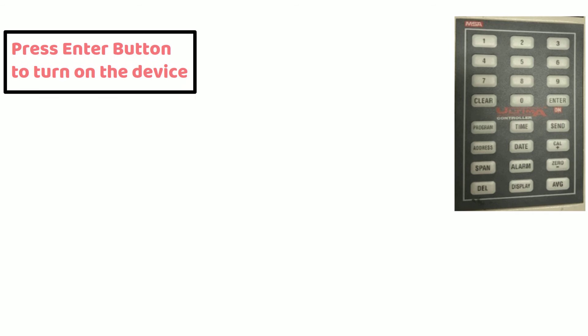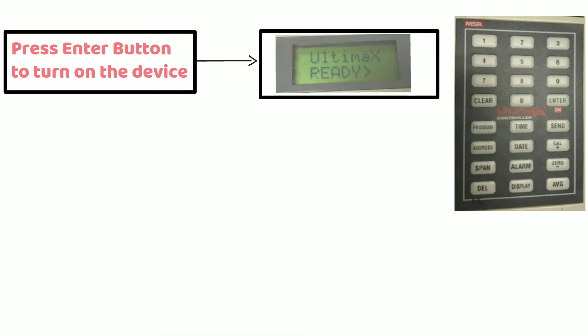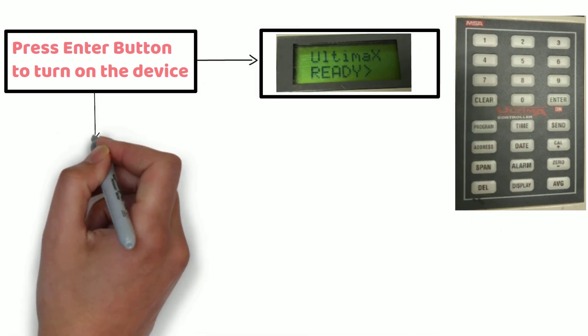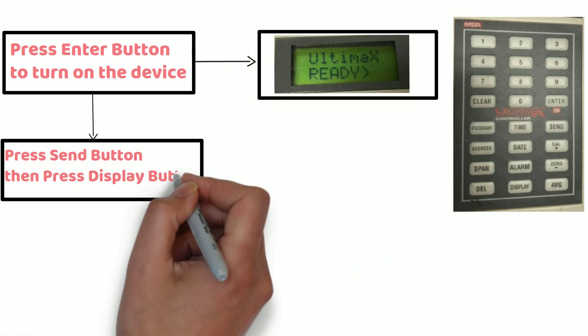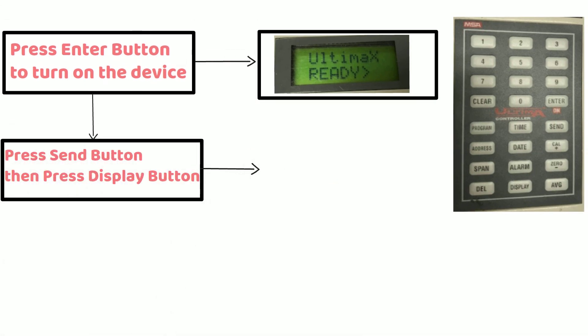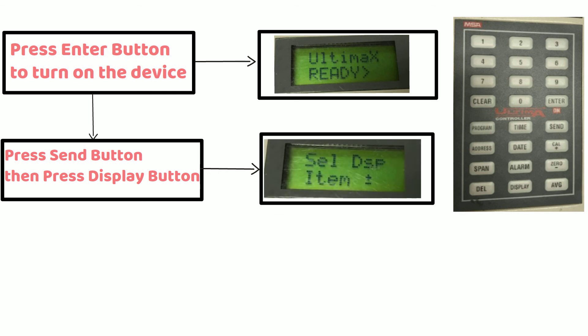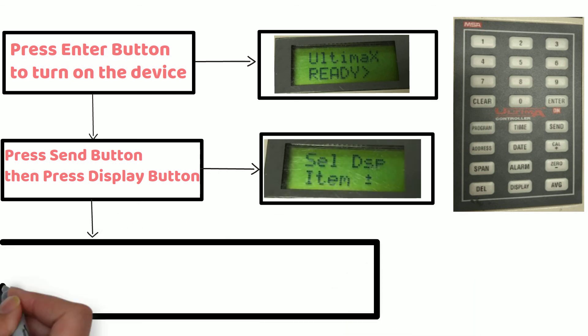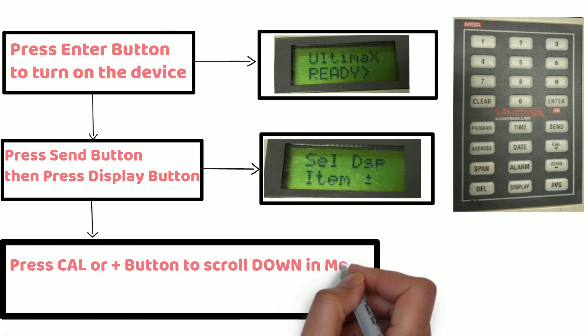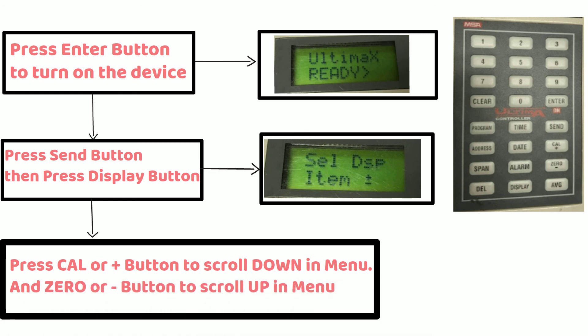First of all, press enter button to turn on the device. And you can see Ultima XE ready on the controller display. Now press send button and then press display button. You can see select display item on controller display. At this time, press cal or plus button to scroll down through menu and press zero or minus button to scroll up in menu.